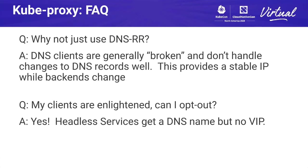A couple of common questions: why not just use DNS for load balancing? DNS clients are historically somewhat broken — Java was a common offender — and they don't handle changes to DNS records very well. Typically you do a single lookup and then forget that the record could change. The next question is: my clients can already do load balancing inside the client itself — common examples are thick clients like the Redis client library or gRPC. Can I opt out? Yes. You can have a headless service, which gets a DNS name that returns a list of backends as A records but doesn't need the virtual IP.